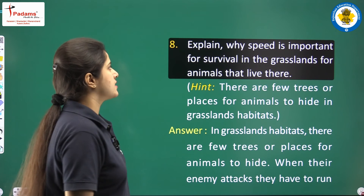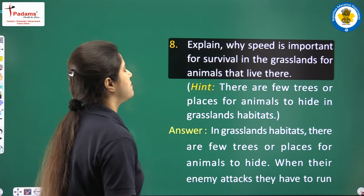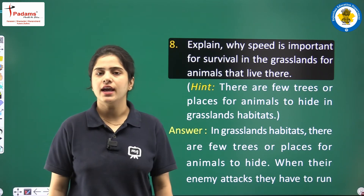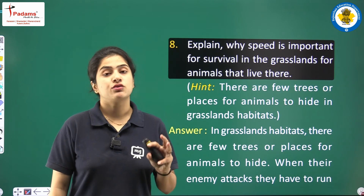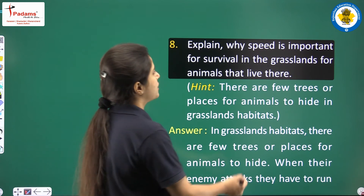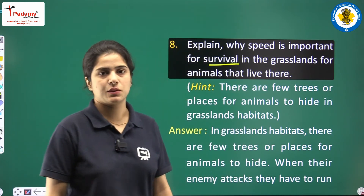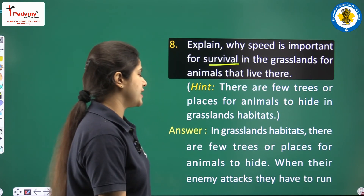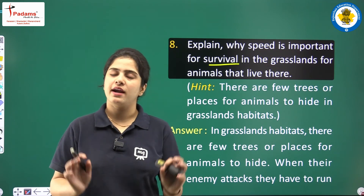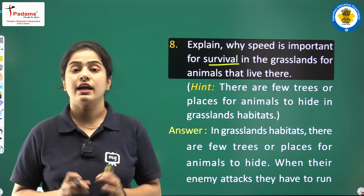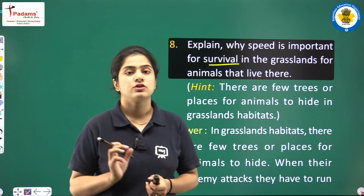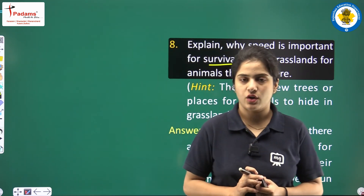Looking at the next question: explain why speed is important for survival in grasslands for animals that live there. In grassland habitats, there are few trees or places for animals to hide. So when a predator like a lion sees a deer, and the lion starts chasing the deer, whoever has more speed will win. If the lion runs faster, it eats the deer. If the deer runs faster, it survives.